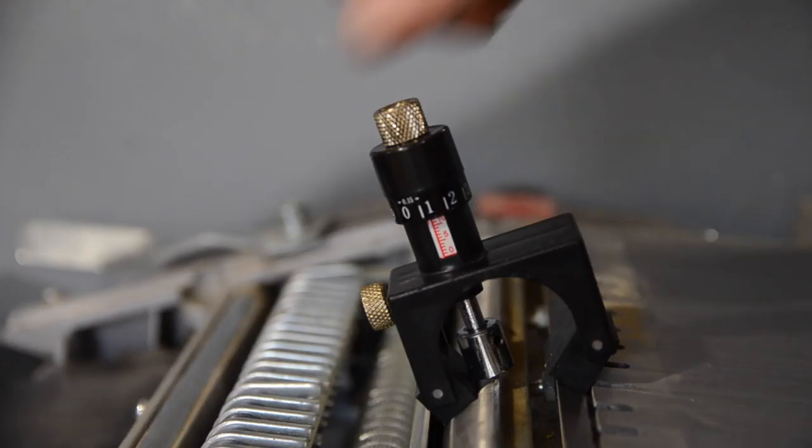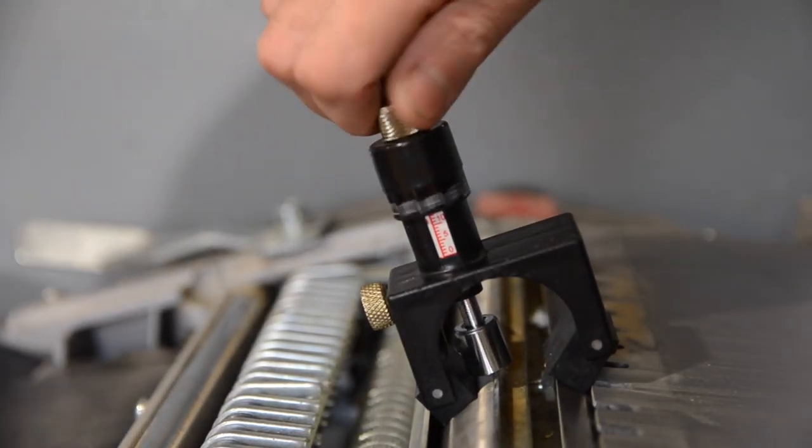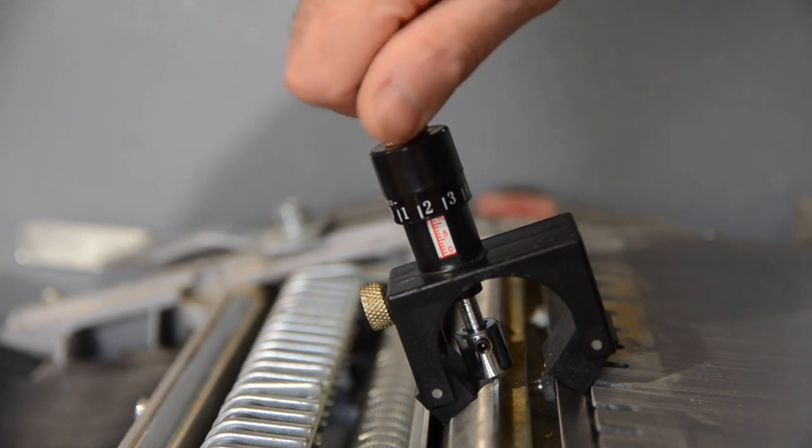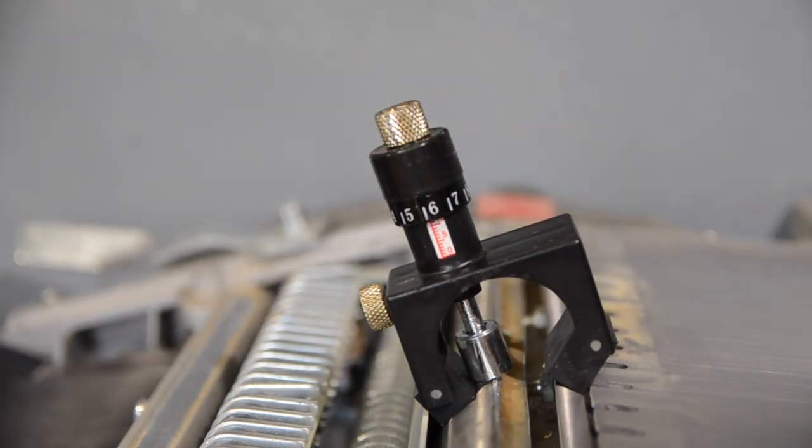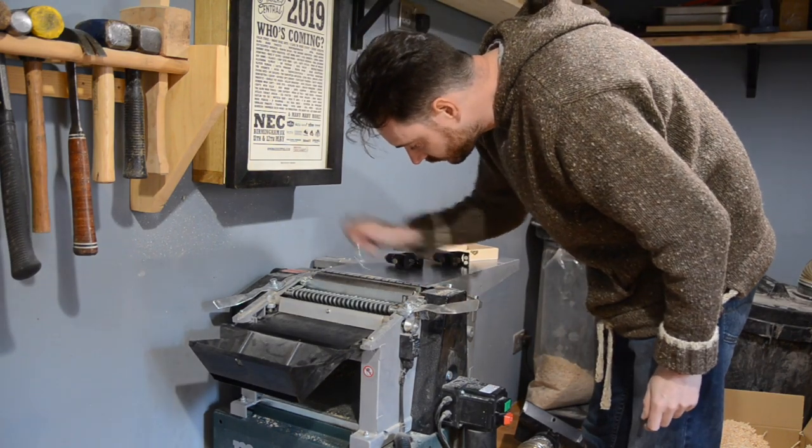They have magnets on them and they sit either side of the blade on the cutter head. Then you can wind it down until this magnet touches the top of the blade. It has a set of numbers in white and red, and I need to take a note of both of those as I'm going to need them later.